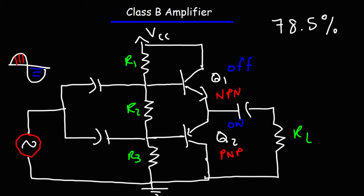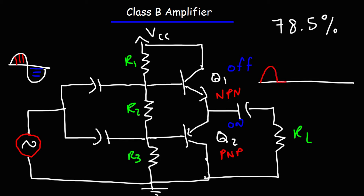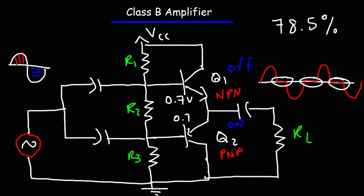This improves the efficiency of the class B amplifier. However, there's one problem with this particular circuit besides the efficiency not being 100%, and that is crossover distortion. The output doesn't look like a nice, pure sine wave. The crossover distortion is created due to the fact that the emitter-base voltage of each of the two transistors is approximately 0.7 volts. So until the input sine wave reaches positive or negative 0.7 volts, the two transistors will be off, and the output voltage will be 0 at this point. That's the one disadvantage of the class B amplifier — the presence of crossover distortion.